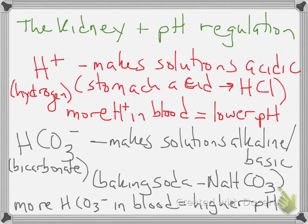As you may remember, anything with a pH below 7 is an acid, anything with a pH above 7 is a base. The pH of our blood is typically around 7.4. We'll get into that a little bit later, but just to summarize what's going to happen here.